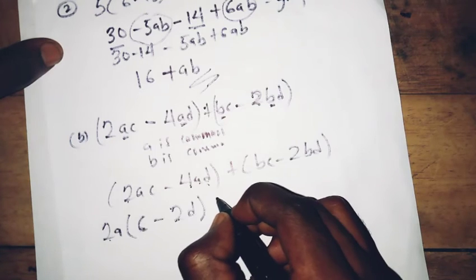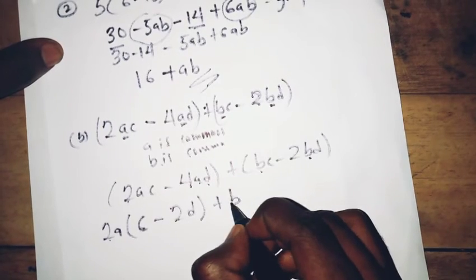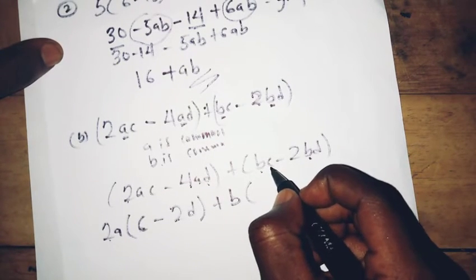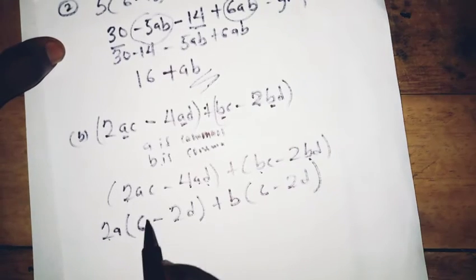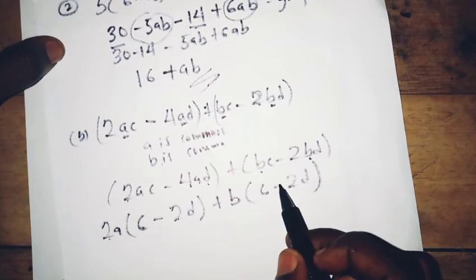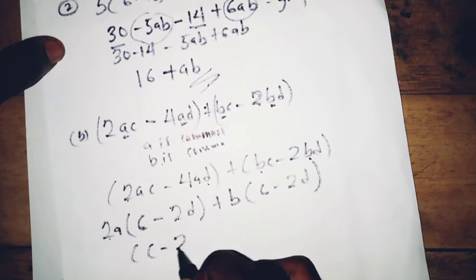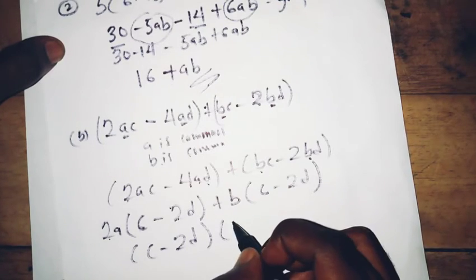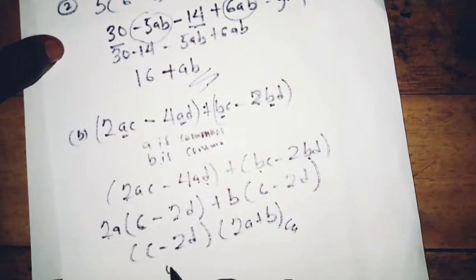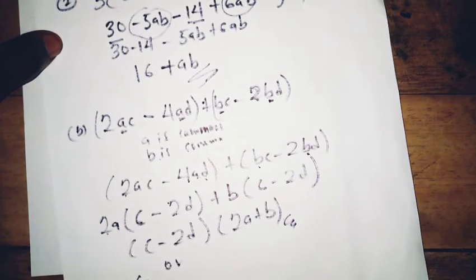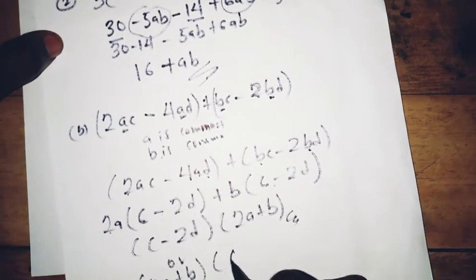For the last two terms, B is common: B comes out, leaving c minus 2d. Since both groups share the common factor (c minus 2d), the fully factorized expression is (2a plus b)(c minus 2d). That is the answer for this question.